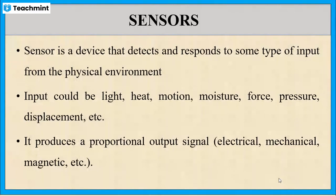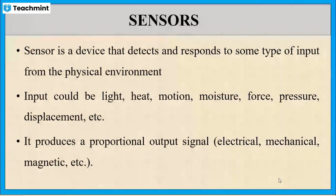If we consider a human being, we are equipped with five different types of sensors. Our eyes detect light energy, our ears detect sound, our tongue detects taste, our nose detects smell, and the skin detects pressure and temperature.